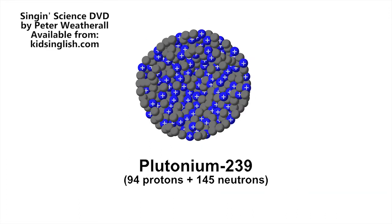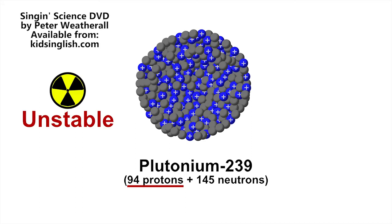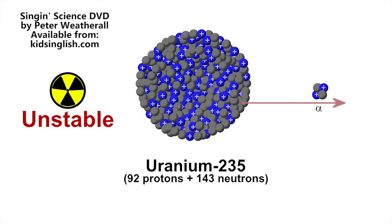Nuclei with more than about 83 protons become increasingly unstable, no matter how many extra neutrons are added to the nucleus, as the repulsive forces between protons win out over the sticky nuclear glue provided by all of the nucleons, resulting in a tendency for atoms with very large nuclei to undergo radioactive decay.